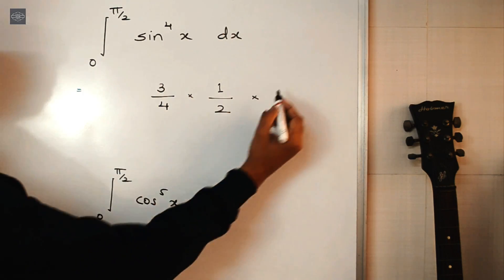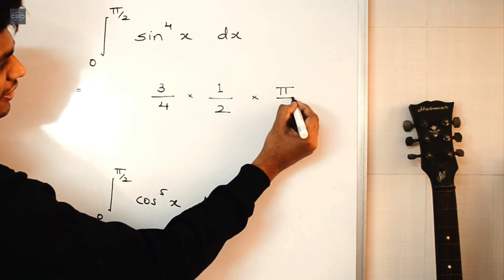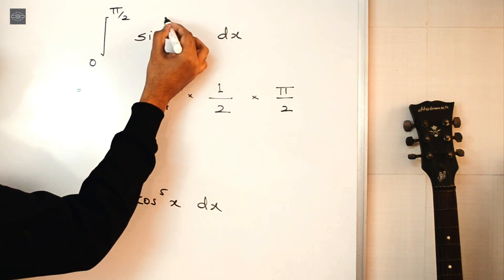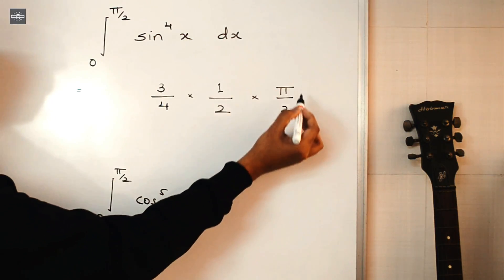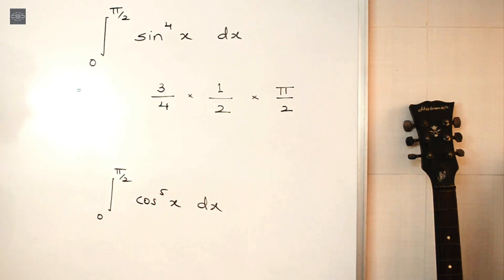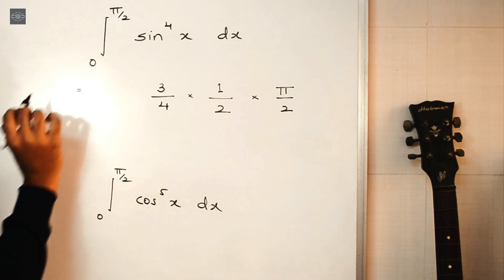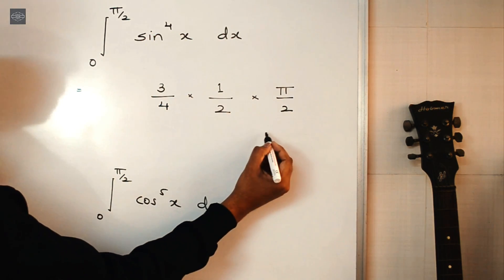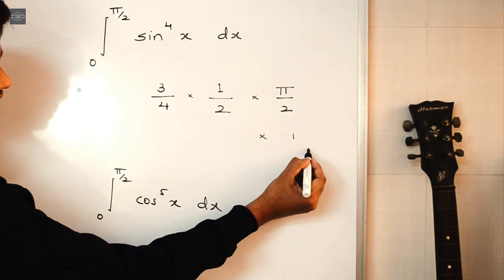If this power is an even number, then you simply multiply all terms by π/2. If the power is even, simply multiply by π/2. And if this power is an odd number, like 5, 7, or 3, then you simply multiply by 1.